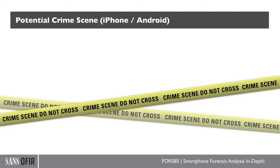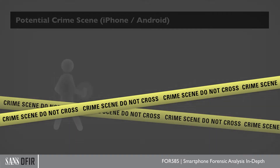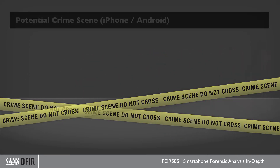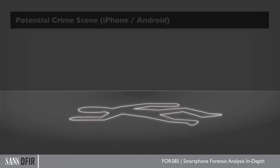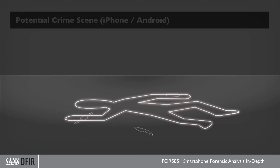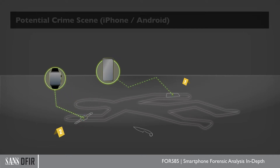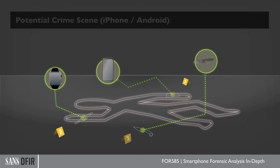Before we dive into the next section, I want to paint the picture of the goals of what we're going to do when we're trying to put a person at a scene of a crime. So imagine a crime scene. A crime has occurred. The person that is now murdered has a phone with them. They potentially have other electronic devices with them or near them. The body is left behind. A weapon is left behind. What can we do digitally at this point? How can we say how did the person get to that crime scene, who possibly did it, and what data is there?